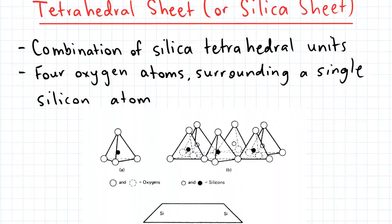So the first fundamental crystal sheet is the tetrahedral sheet, also known as the silica sheet. The silica sheet is made up of a combination of silica tetrahedral units, and in a single tetrahedral unit we have a silicon atom which is surrounded by four oxygen atoms.